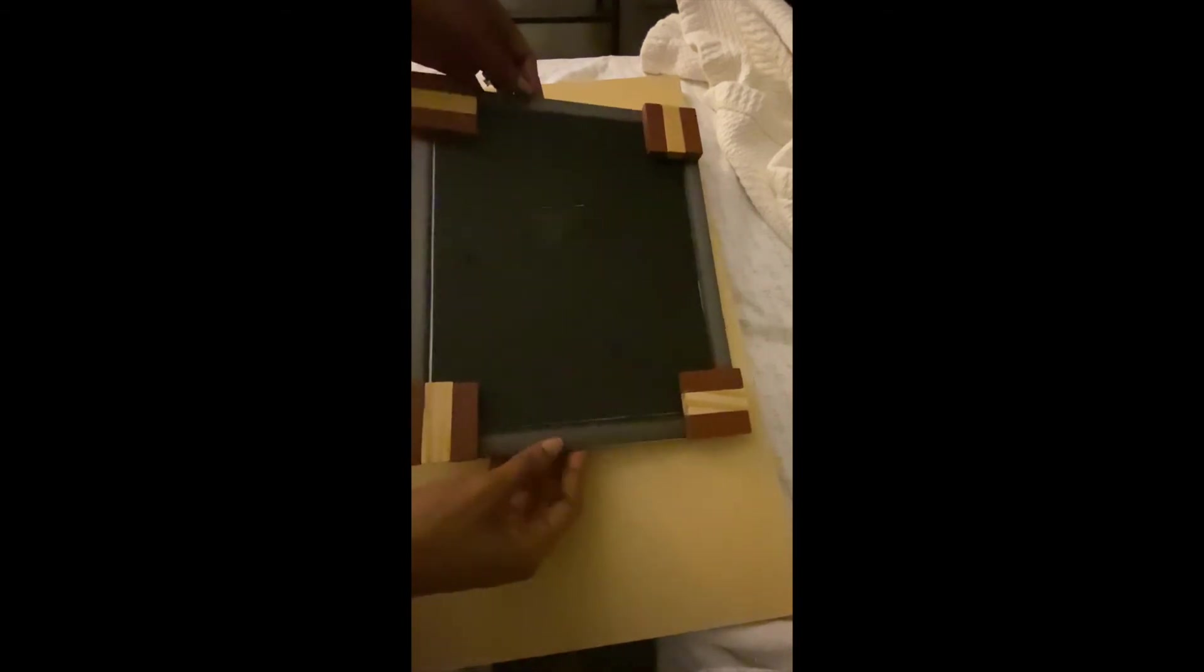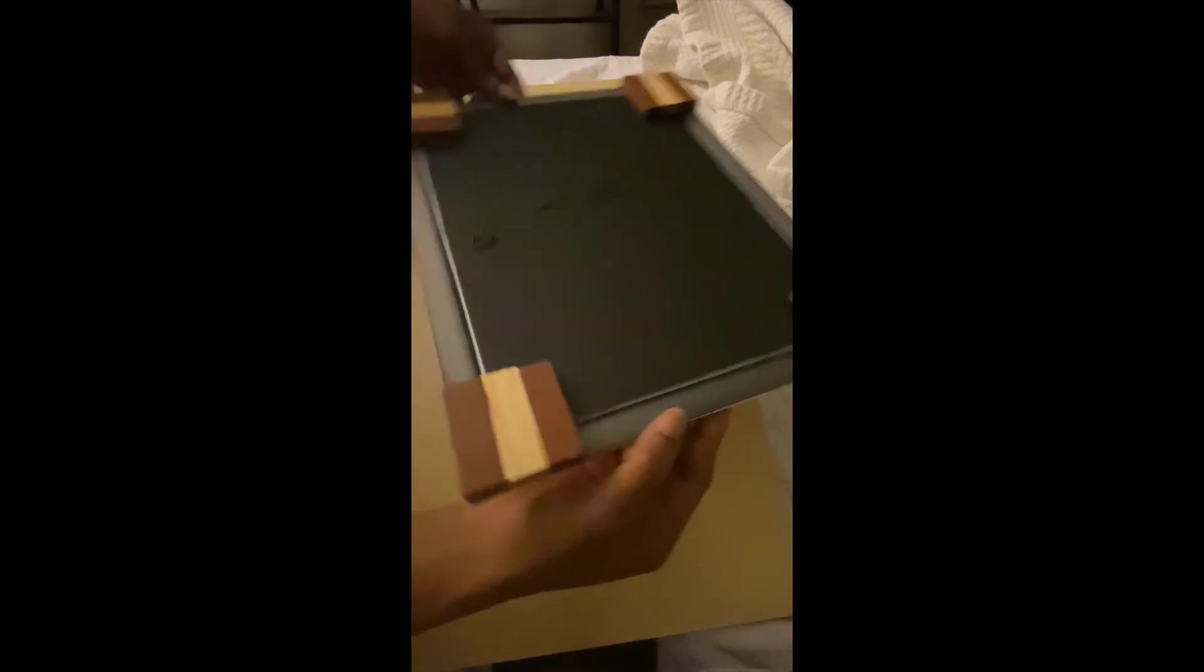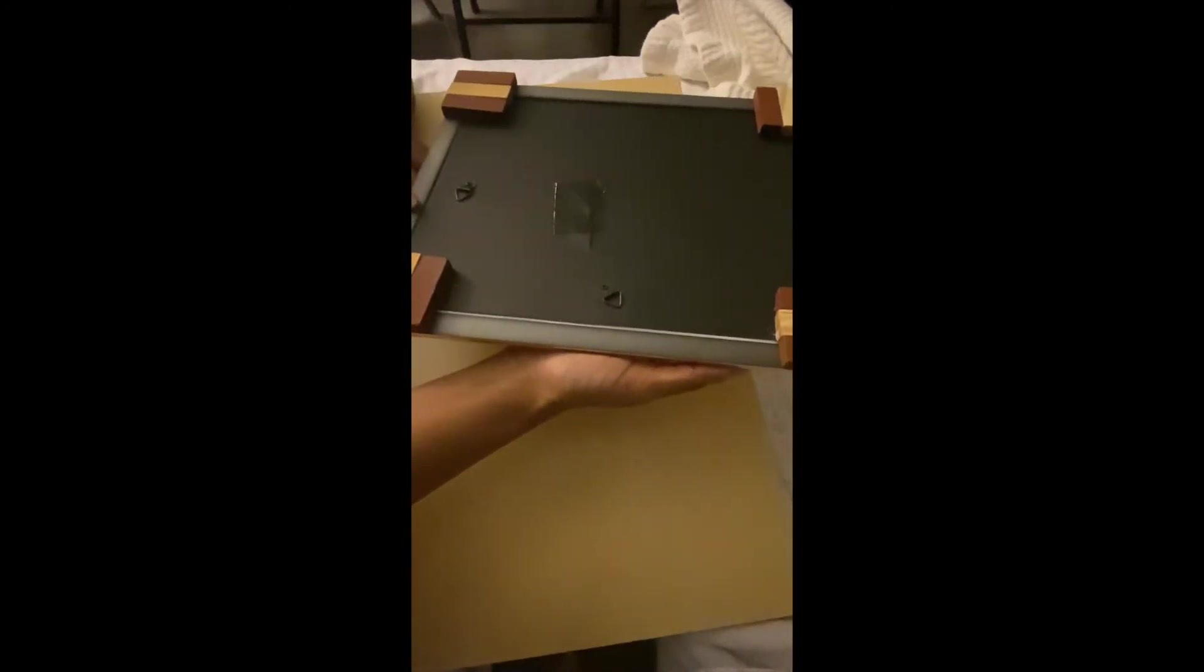Alright, so that's it for the base. We have everything glued. Give it a little time to dry. And we're going to go ahead and flip it over and work on the main side of the tray.